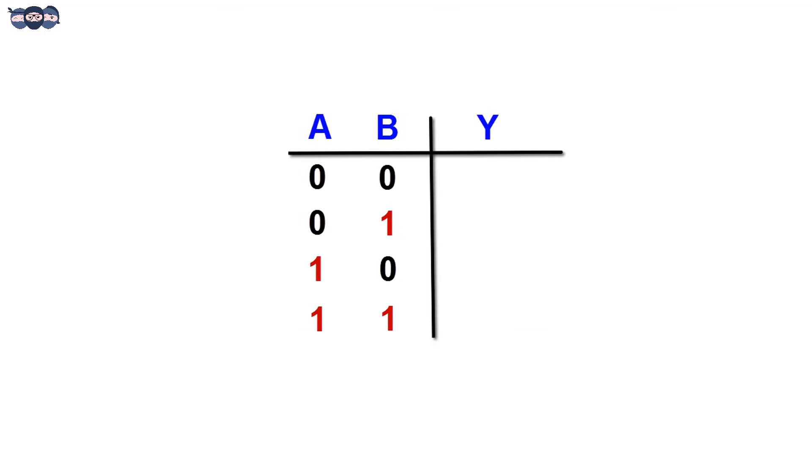There is a trick to fill the truth table. We start filling with the left-most input and will go column by column. Since we know it will have four input combinations, two zeros are followed by two ones. Next column will have one zero followed by one one.